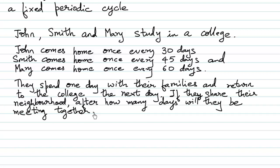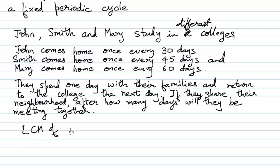They share their neighborhood, so after how many days will they be meeting together? That means John comes home once every 30 days, stays home for one day, and then returns to his college. All three study in different colleges and come home to stay with their families. So you need to find: if they all set off for their colleges together, after how many days will they meet together? In order to find this, we're going to find the LCM of 30, 45 and 60.